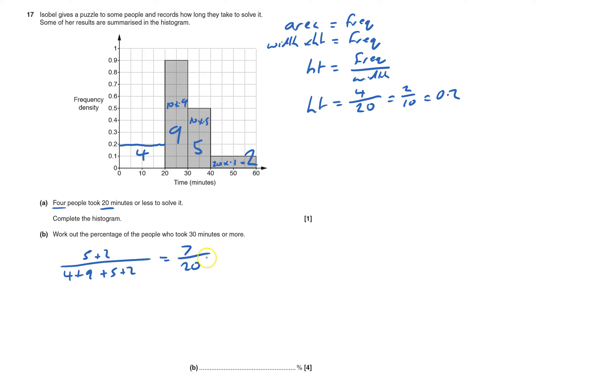7 over 20, I need to change that into a percentage, so you times it by 100% or just put it over 100. If you times top and bottom by 5, that will give me 35 over 100, and that's 35 percent.